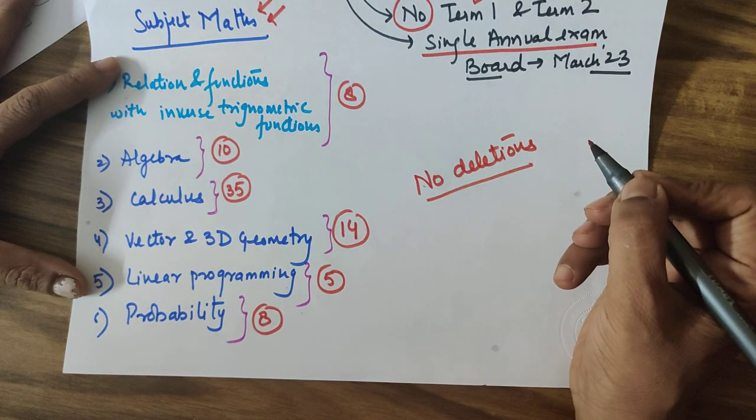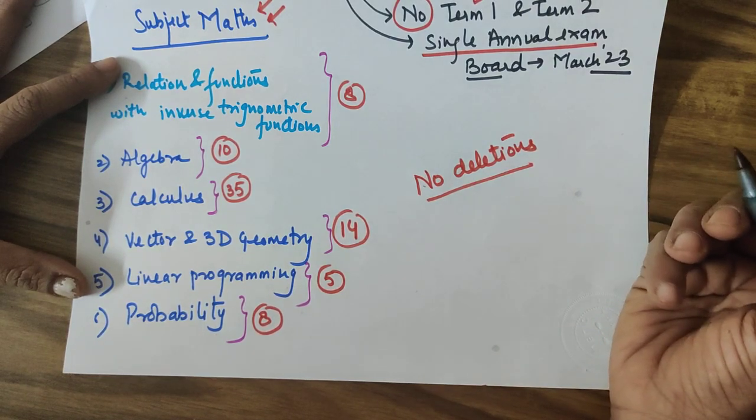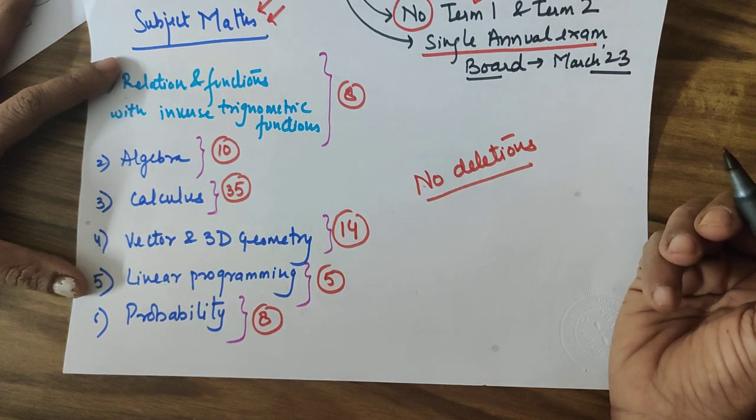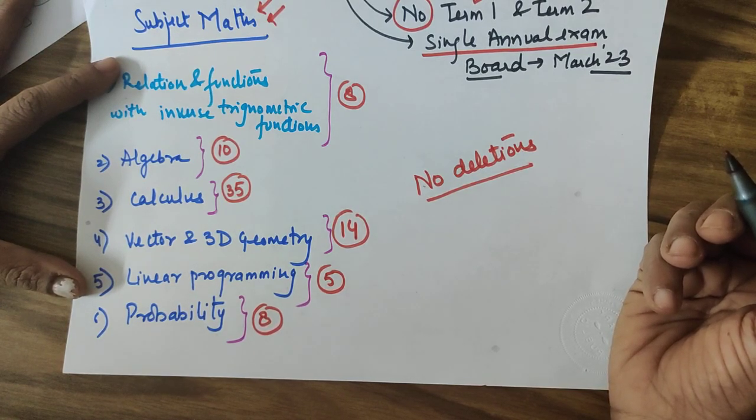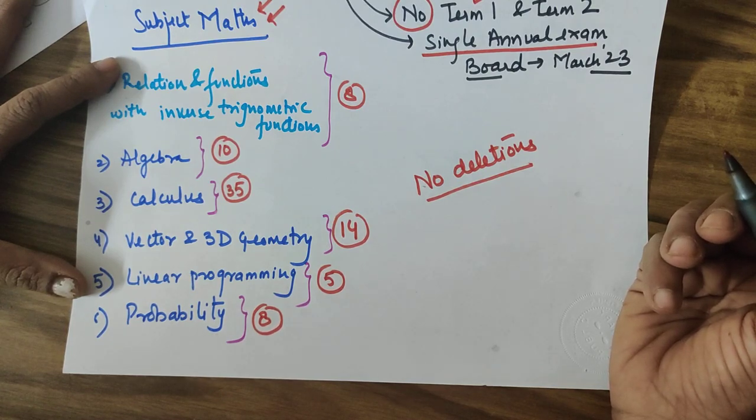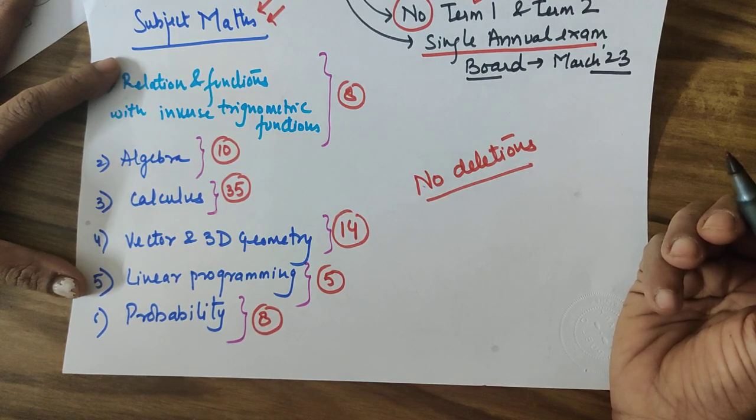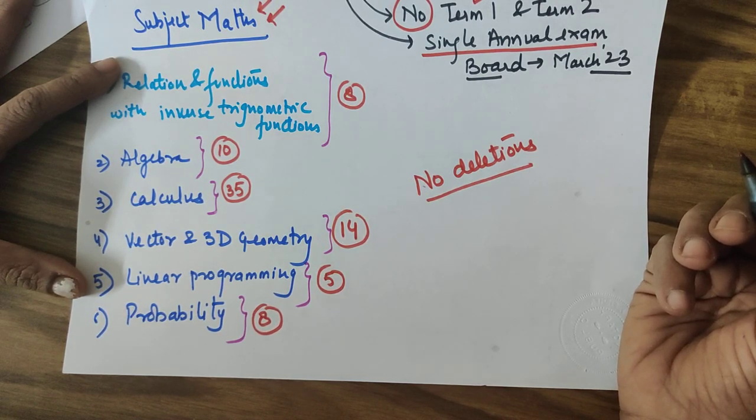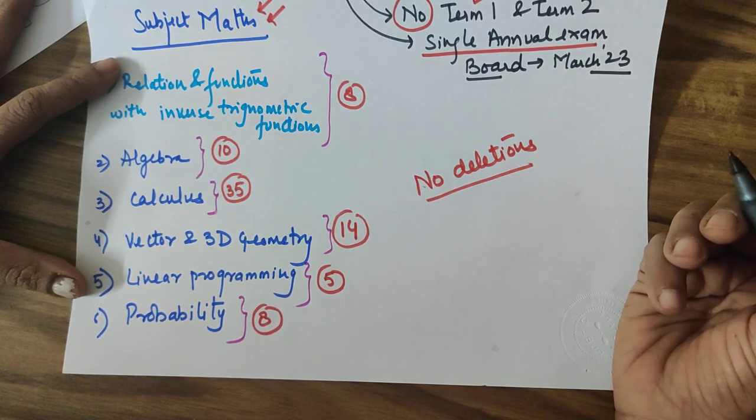As far as the syllabus of last year and this year is concerned, there are no deletions. Of course there might be minor changes which your mathematics teacher would be in a better position to explain to you. But overall I would say no much deletions are observed in the subject of mathematics. Chemistry did have considerable deletions which was the reason I had posted the first video of chemistry. Since you people wanted me to do it for maths and physics, I did it. But I find there are not much changes in the syllabus of this year as proposed by the CBSE.